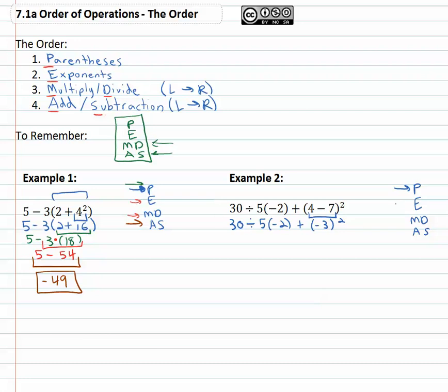Now we move down the list to the exponents. The exponents are the negative 3 squared, everything else remains the same, 30 divided by 5 times negative 2 plus negative 3 squared is 9. Continuing to move down we multiply and divide and it's really important to remember multiplication and division are done from left to right. In this problem we've got division and multiplication. The one that's done first is the one that comes first left to right, in this case the division. Thirty divided by 5 is 6 times negative 2 plus 9, and continuing with the multiplication and division, 6 times negative 2 because it's next to the parentheses, negative 12 plus 9.